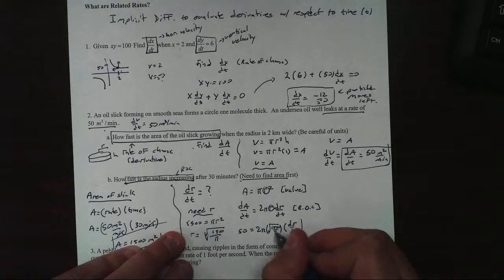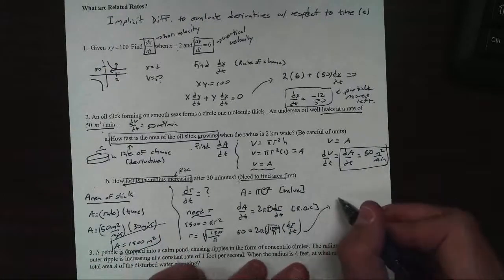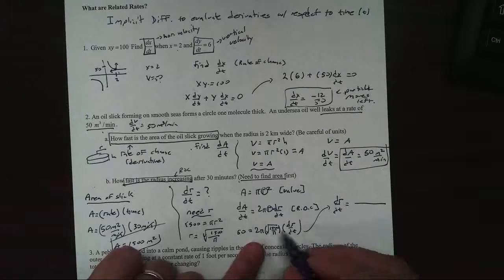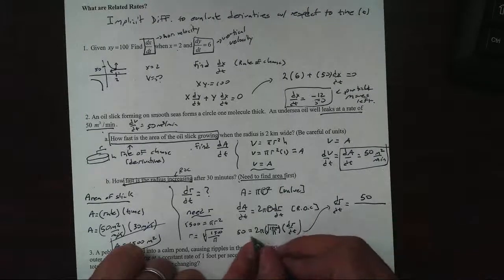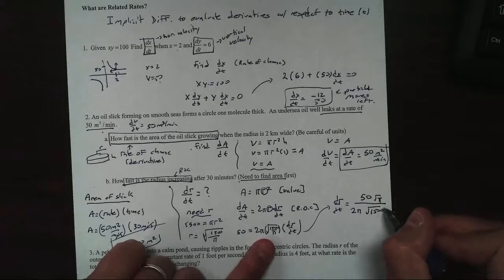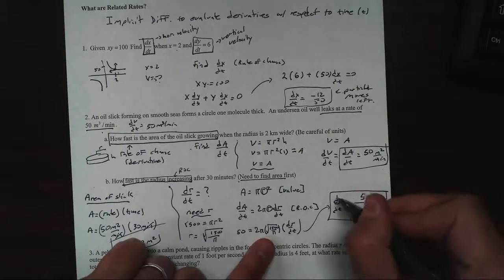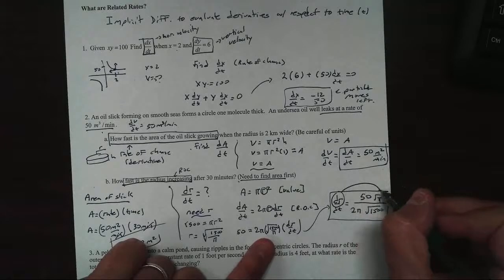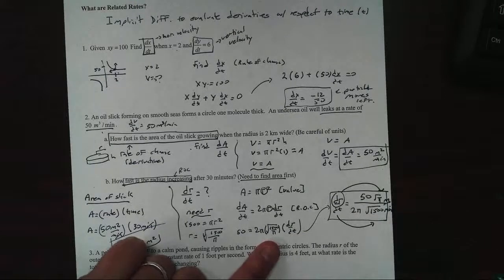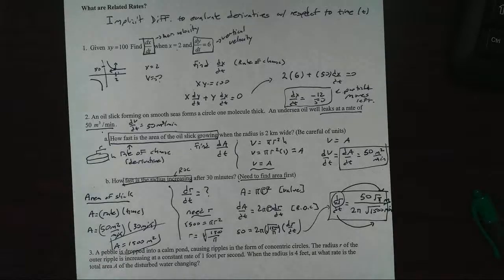If I were to solve this one, the change in radius over change in time would be 50 over 2 pi times the square root of pi over the square root of 1500. If you type all that in your calculator, you're going to get the change in radius. How do you get the units though? Radius is a single unit in meters, and time is measured in minutes, so it's going to be meters per minute.